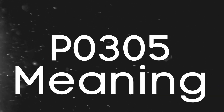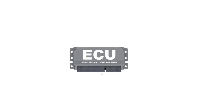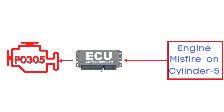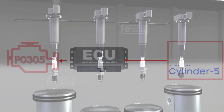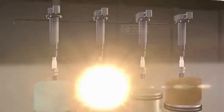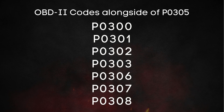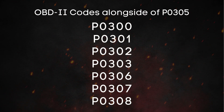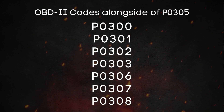First things first. Let's break down what the P0305 code actually is. This code gets triggered when the Engine Control Module, or ECM, detects an engine misfire on Cylinder 5. A misfire means that the combustion process inside one or more cylinders isn't happening properly. You may also find another OBD-II code, like P0301 to P0308, alongside P0300.